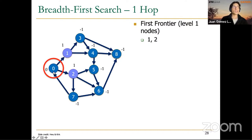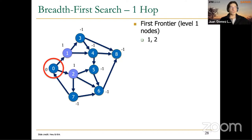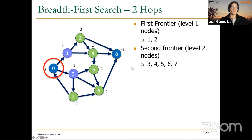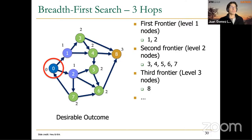In the second iteration, we visit nodes at distance two hops from the source. We discover all the neighbors of nodes 1 and 2, which are nodes 3, 4, 5, 6, and 7 — these five nodes represent the next frontier. In the third iteration, we discover and visit the last node, which is node 8. If the graph were larger, we would need more iterations.